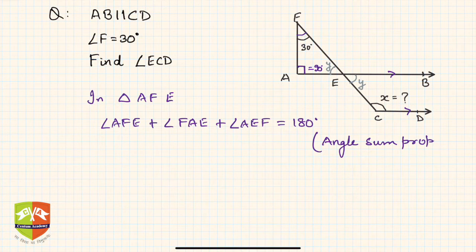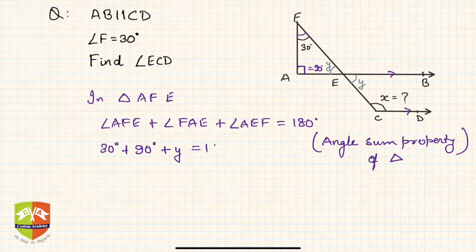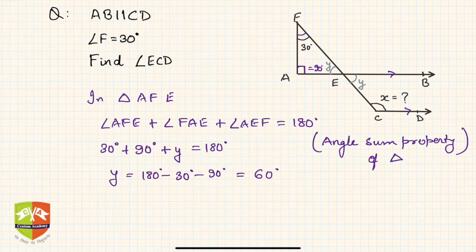Angle AFE is 30 degrees, angle FAE is 90 degrees, and angle AEF is y, which equals 180 degrees total. So y will be 180 degrees minus 30 degrees minus 90 degrees, which equals 60 degrees.